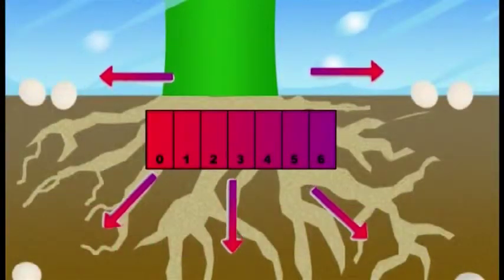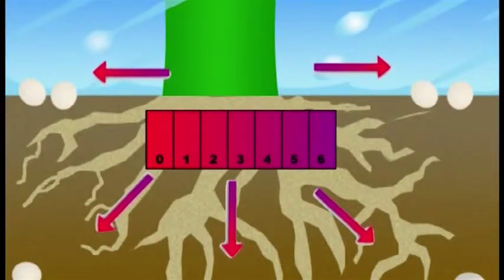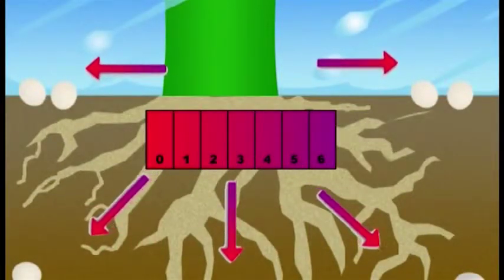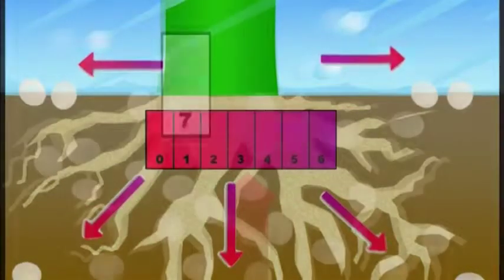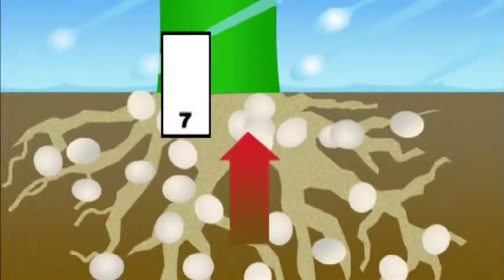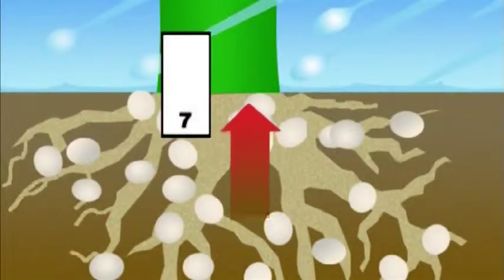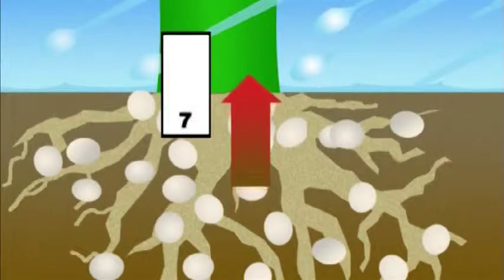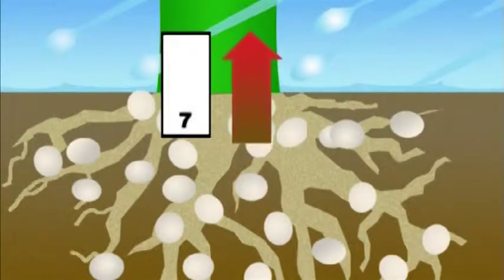In the extremely acidic soil, tests have shown that 75% of your fertilizer is wasted. In the pH neutral field, 100% of the fertilizer is available to the plant, with zero waste. If you want your fertilizer to be effective, you must have balanced soil.